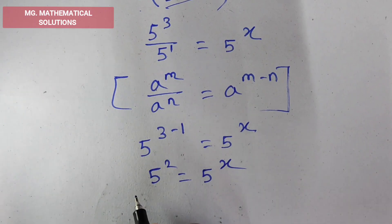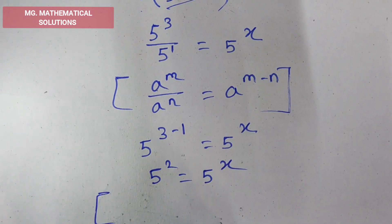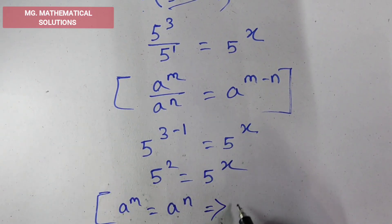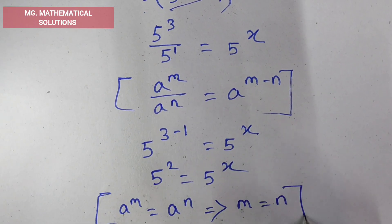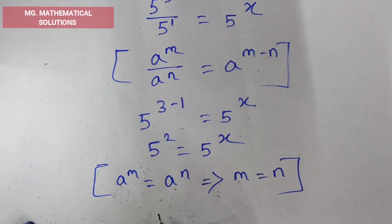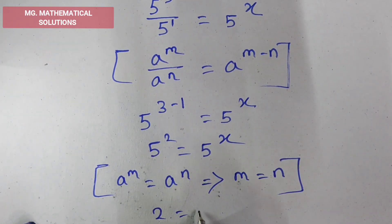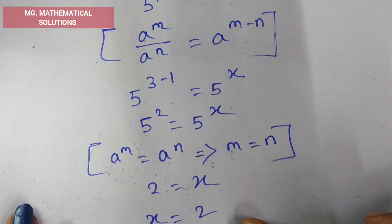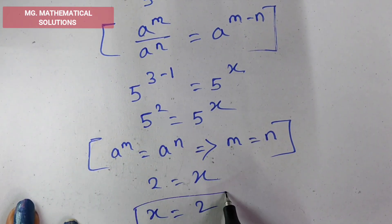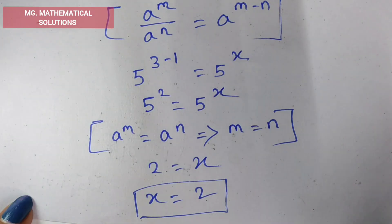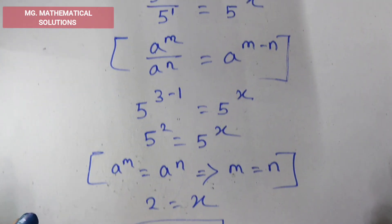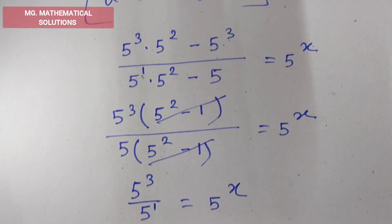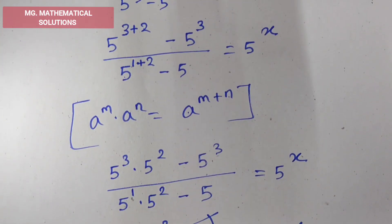Now we use the formula: a to the power m equal to a to the power n implies m equal to n. So here, 2 equal to x, that means x equal to 2. So this is the final answer. Thank you for watching my video. If you like this video then subscribe to my channel and click the bell icon.